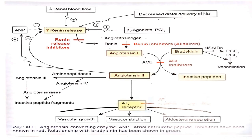Here is the diagram of the renin angiotensin system. Renin release increases whenever there is decreased renal blood flow, decreased sodium concentration at the distal convoluted tubule, or stimulation of beta adrenergic receptors at the juxtaglomerular apparatus, which increases the release of renin.